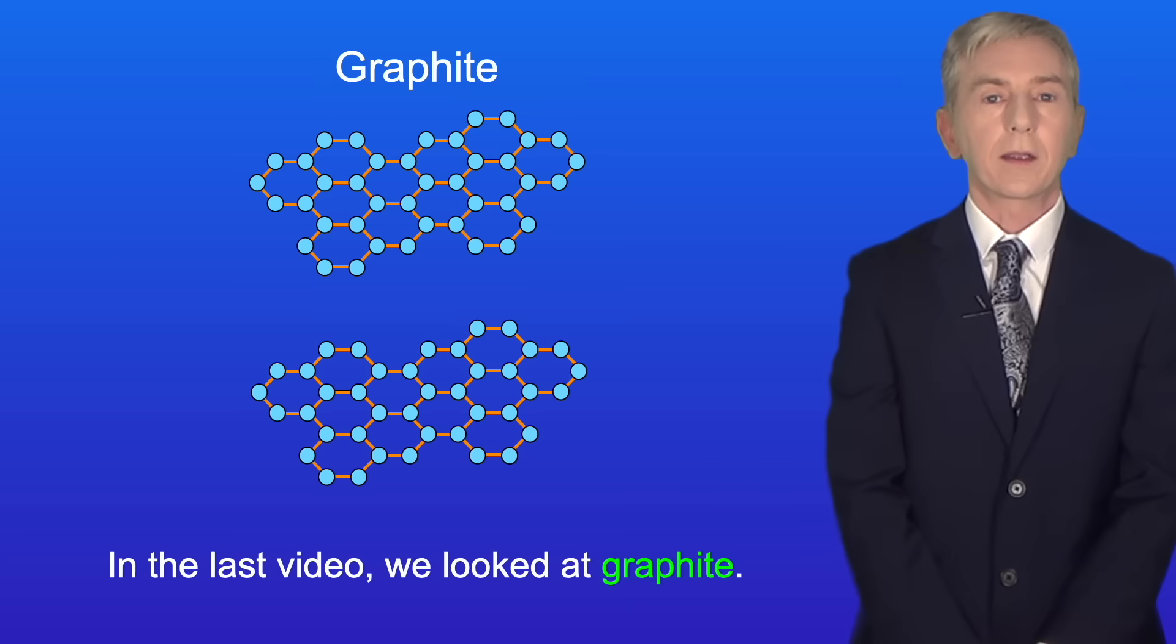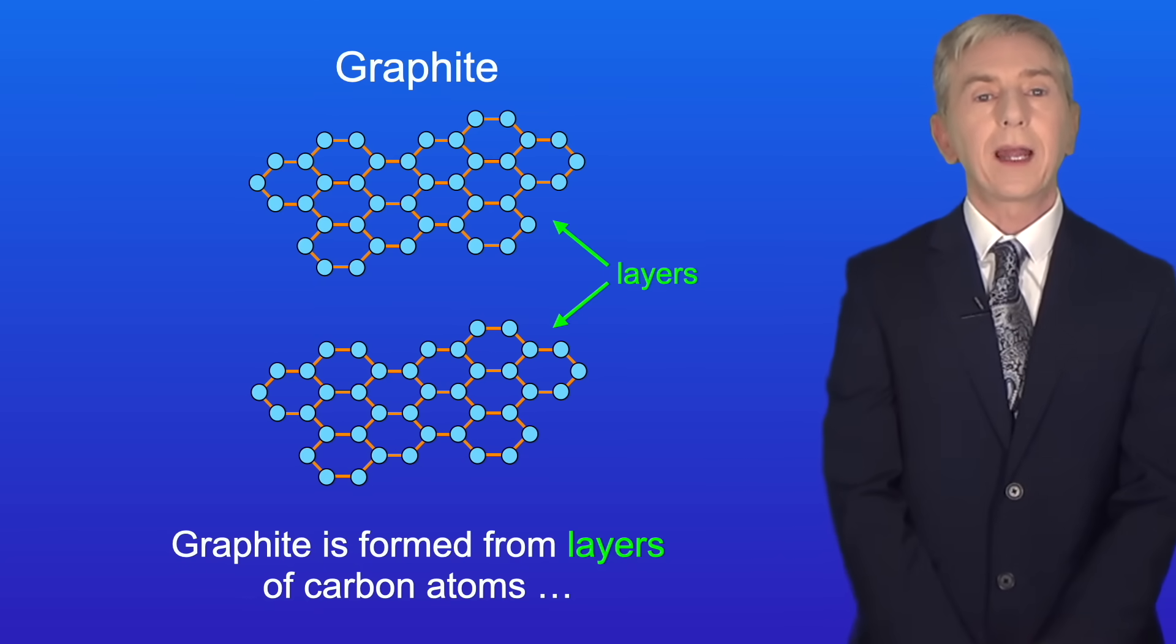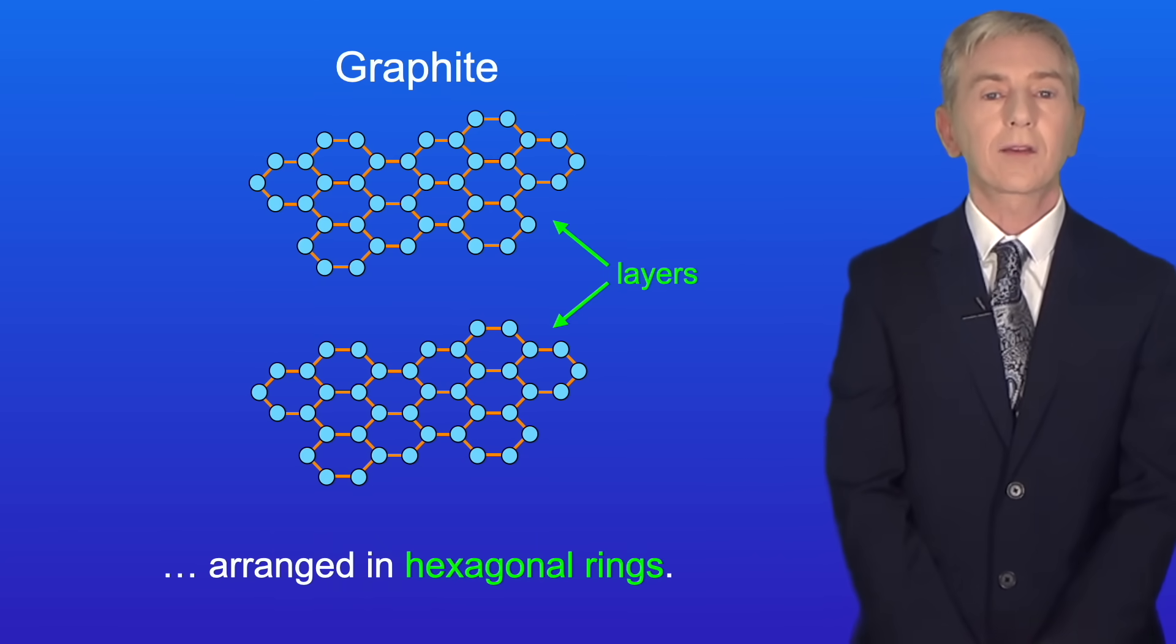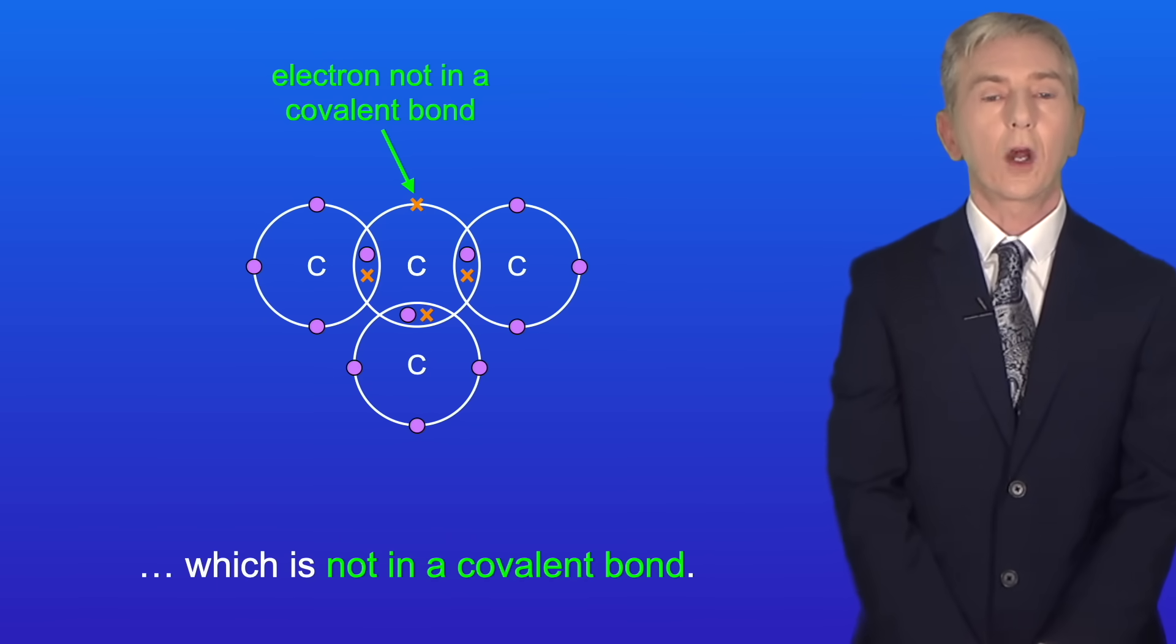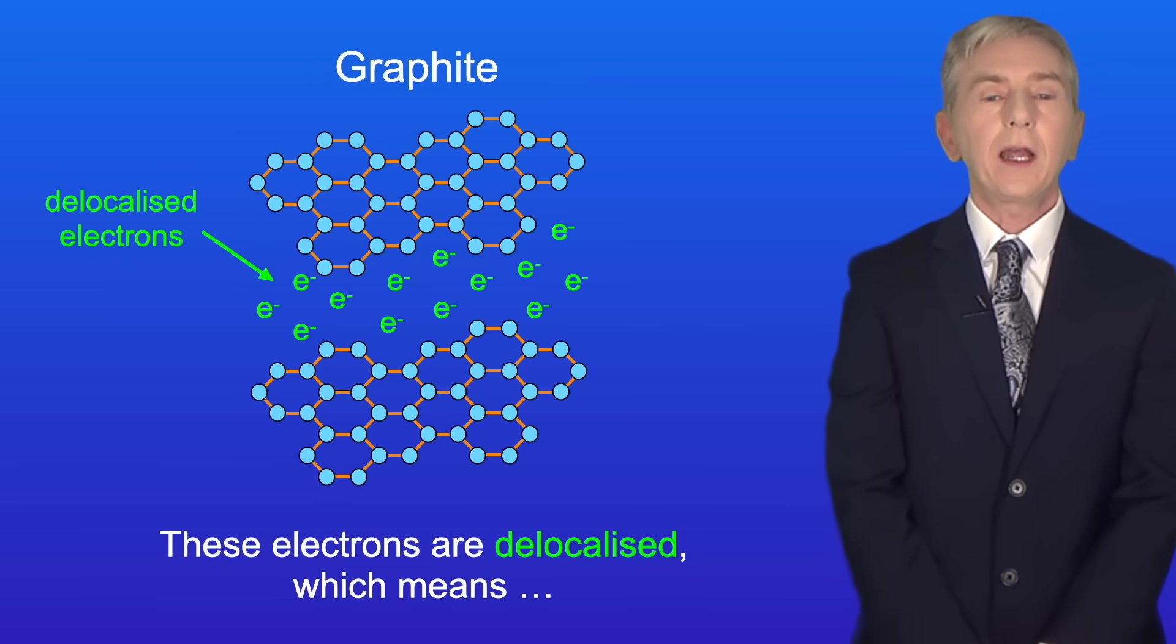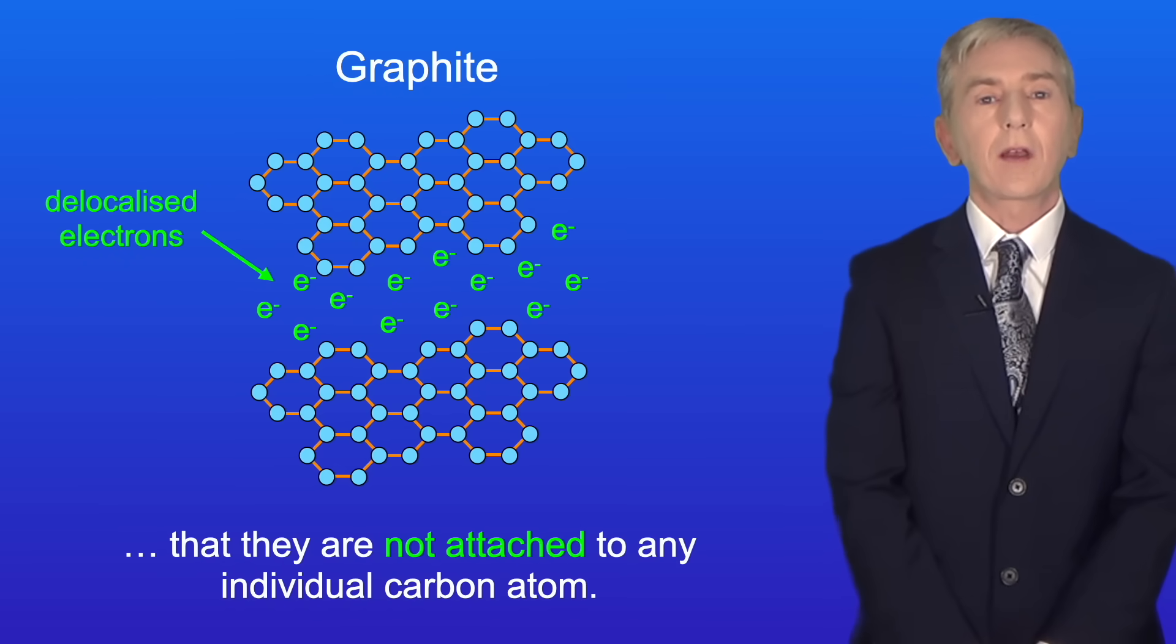In the last video we looked at graphite. Graphite is formed from layers of carbon atoms arranged in hexagonal rings. We saw that each carbon atom has one outer electron which is not in a covalent bond. These electrons are delocalized which means that they're not attached to any individual carbon atom.